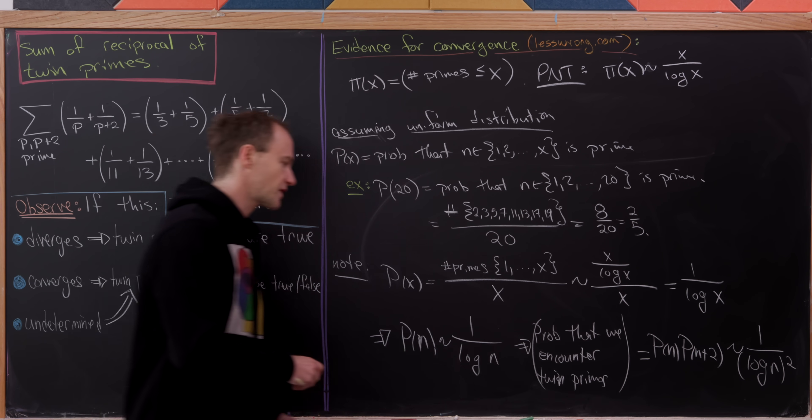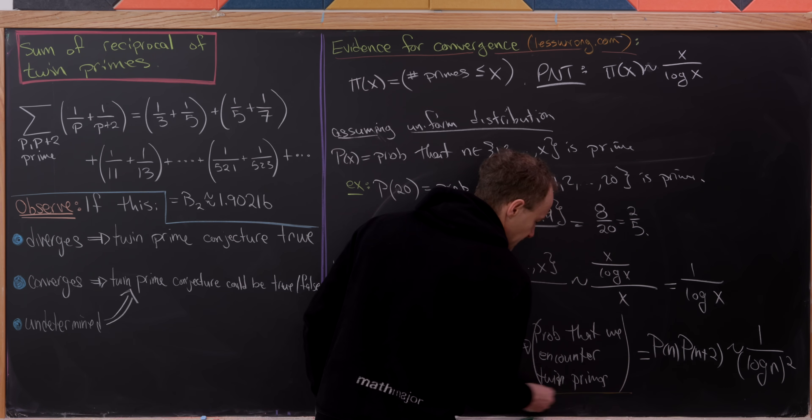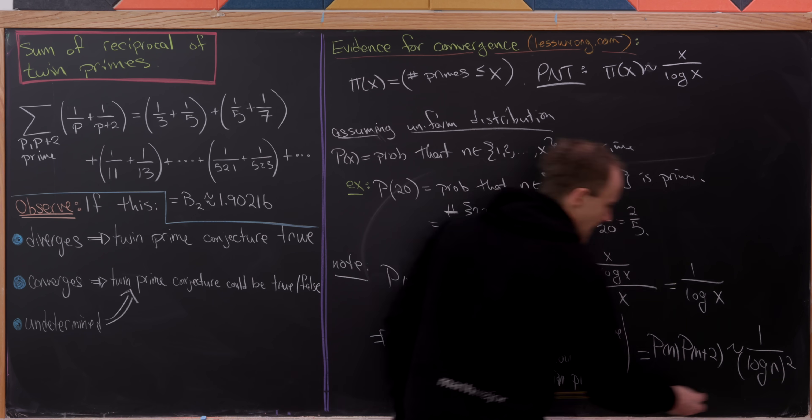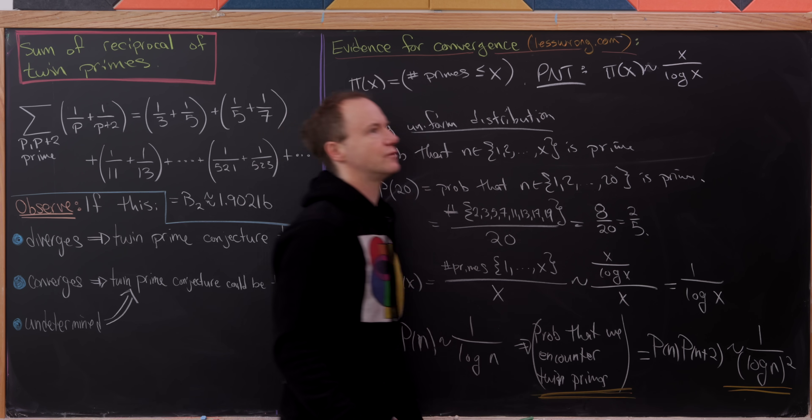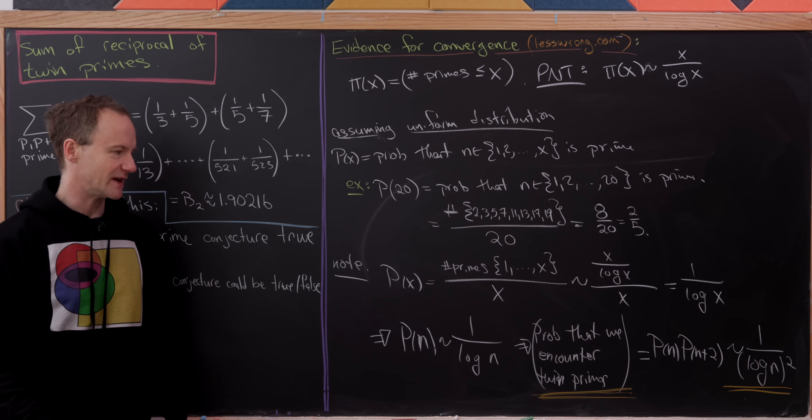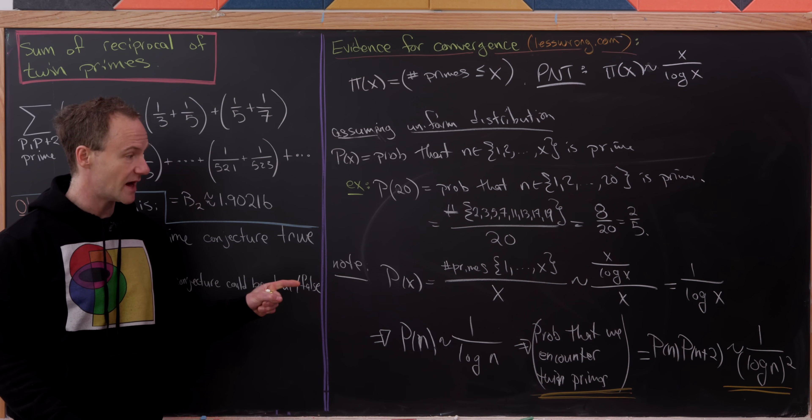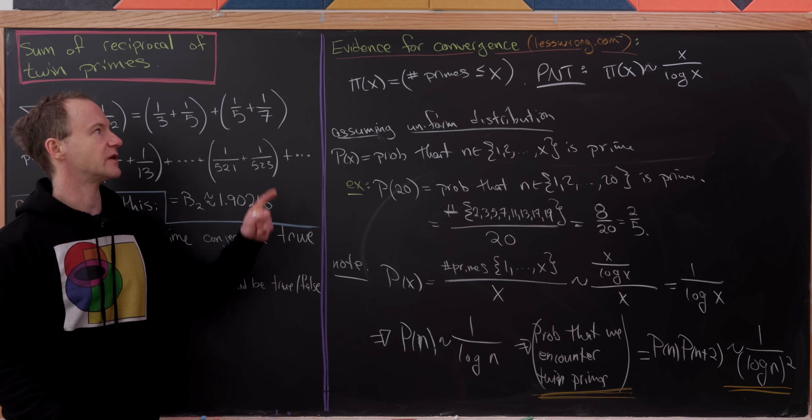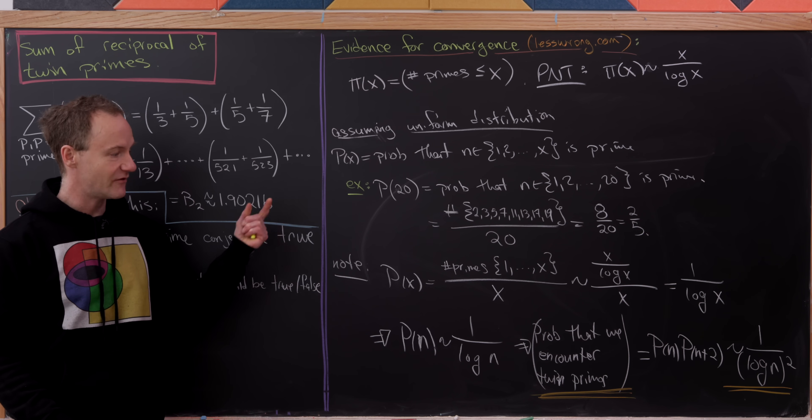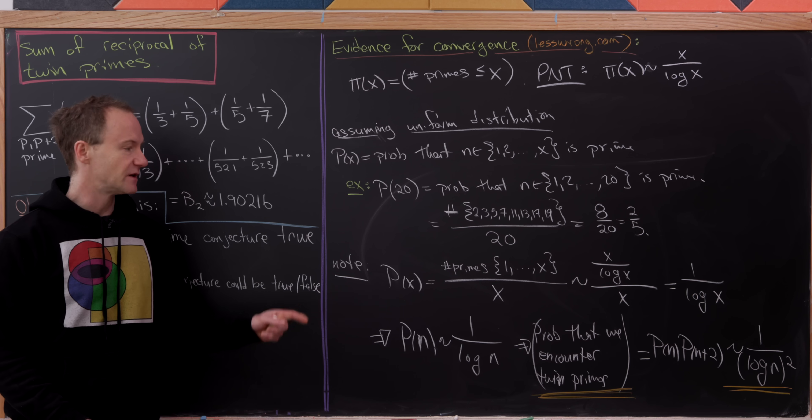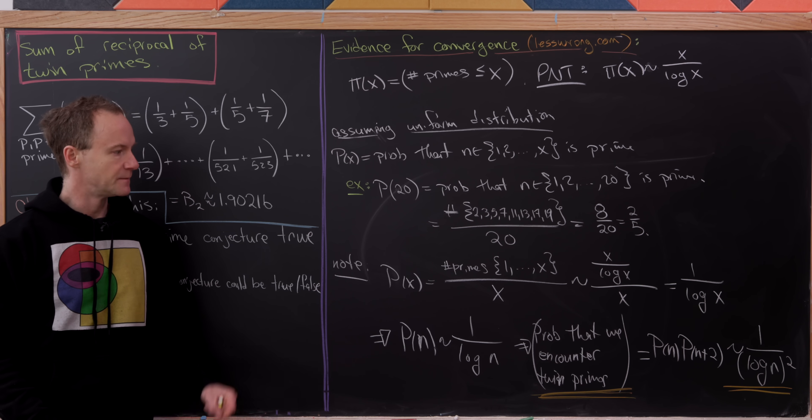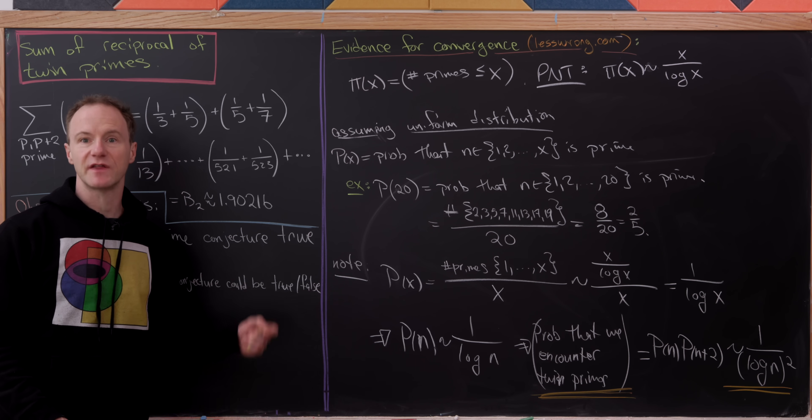So this is a really important kind of assumption that we've made here. I mean, obviously we've got some sort of argument why we expect it to be true, but our whole argument for this convergence or our evidence for our convergence is built out of this orange underline. Okay great. So let's see where this takes us.